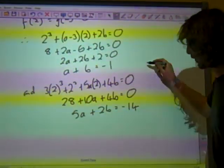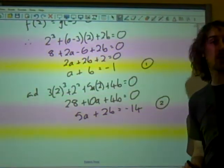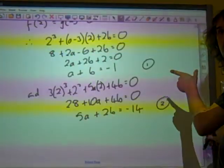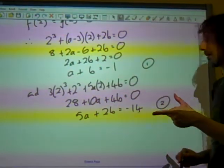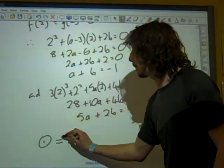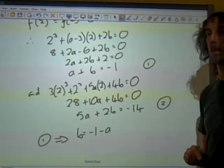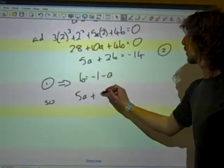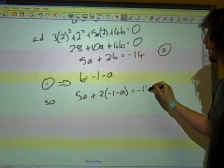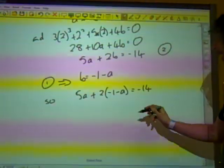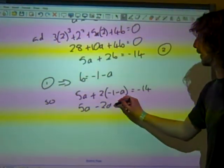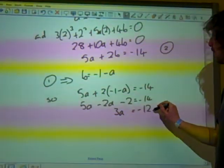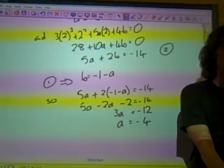We've got simultaneous equations, haven't we? Let's call it equation 1 and 2. We just need to solve these for a and b. Well, let's make sure we're on the right lines. We know that a is going to be minus 4, so let's find a first. Equation 1 implies that b equals minus 1 minus a. So 5a plus 2 times minus 1 minus a is negative 14. We've got 5a minus 2a minus 2 is negative 14. 3a is minus 12. It's a bit of a relief. a is minus 4.